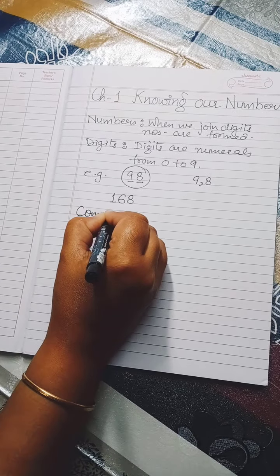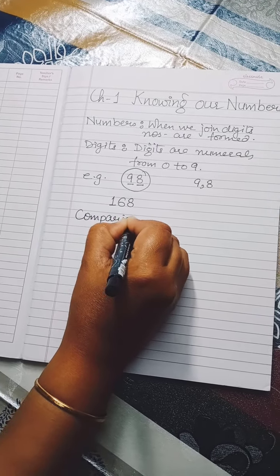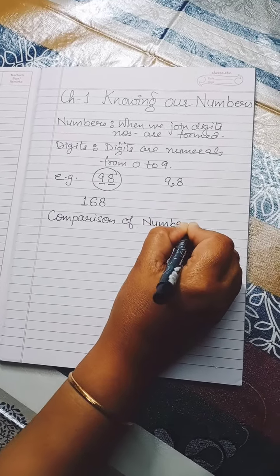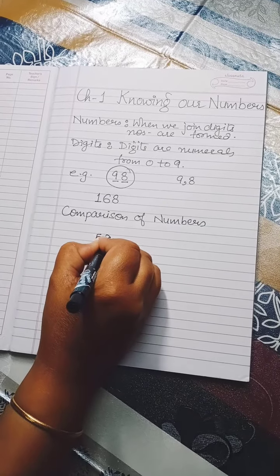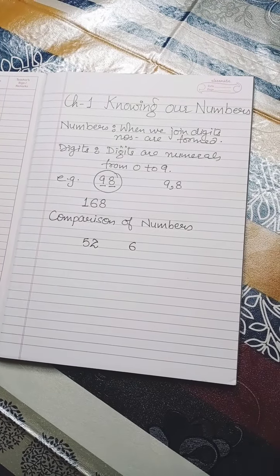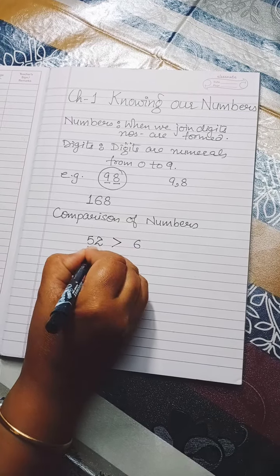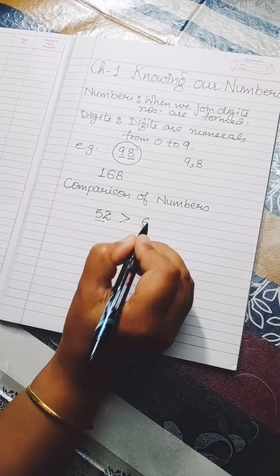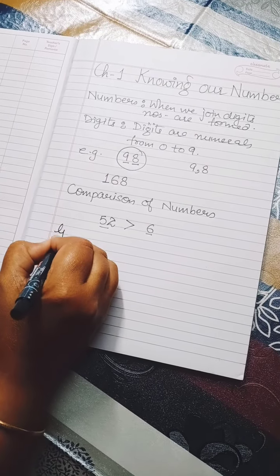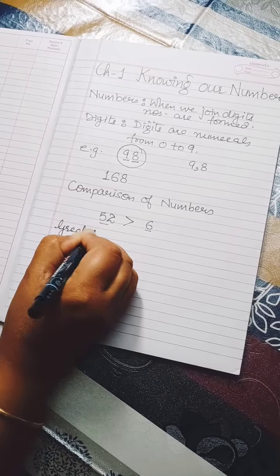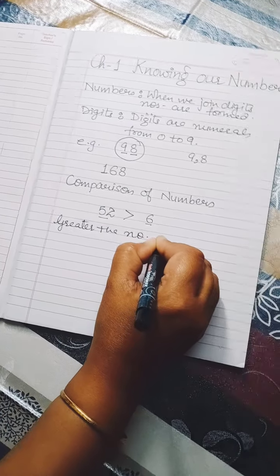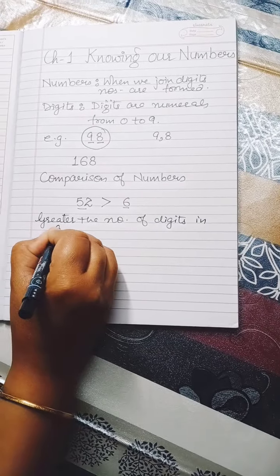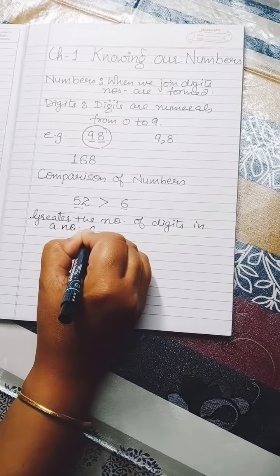Now let's learn about comparison of numbers. If we take two numbers like 52 and 6, which is bigger? 52 is bigger than 6 because 52 is a two-digit number and 6 is a one-digit number. Greater the number of digits in a number, greater is the number.